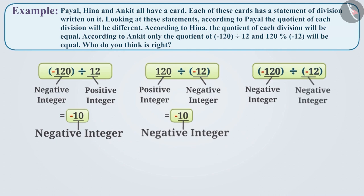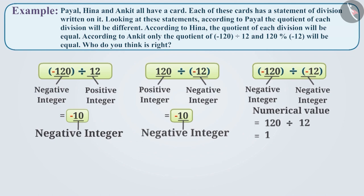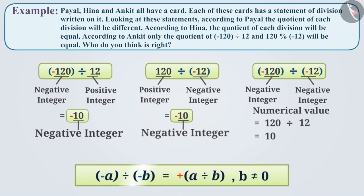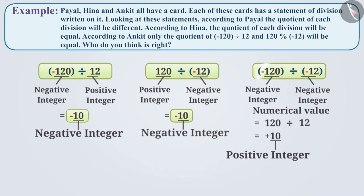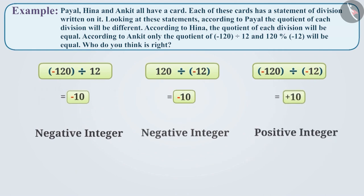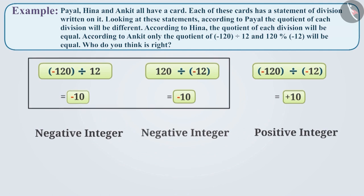In the third statement, we have to divide minus 120 by minus 12. To solve this, first we will divide the numerical value of minus 120, that is 120, by the numerical value of minus 12, that is 12. Its quotient will be 10. Can you tell me what will be the sign of 10? Think. As you may have seen in the previous video, when two negative integers are divided, the quotient obtained is marked with a plus sign. So minus 120 divided by minus 12 gives a quotient of plus 10. Comparing all three, the quotient of the first and second will be equal, but not the third.